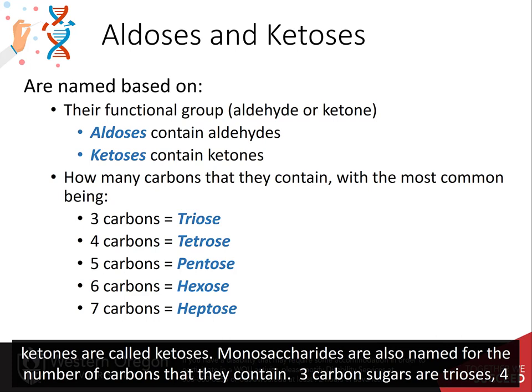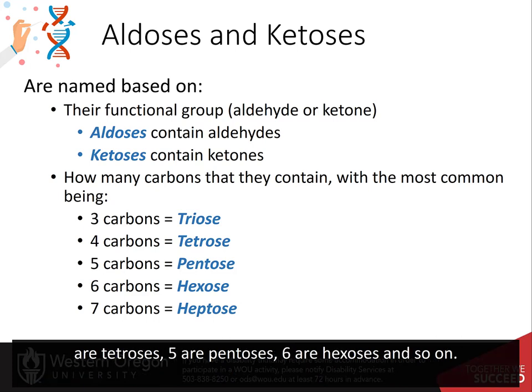Monosaccharides are also named for the number of carbons that they contain. Three carbon sugars are trioses, four carbons are tetroses, five are pentoses, six are hexoses, and so on.